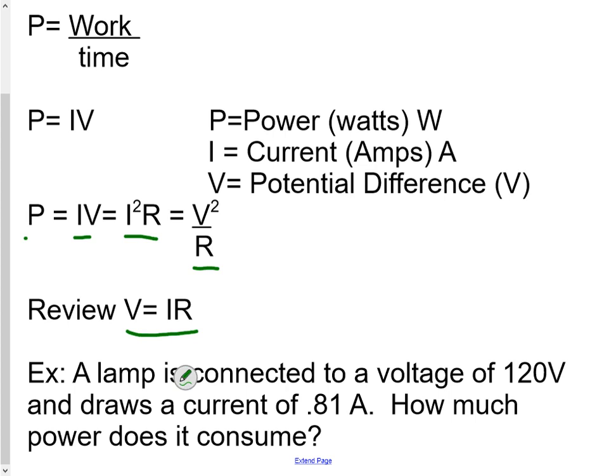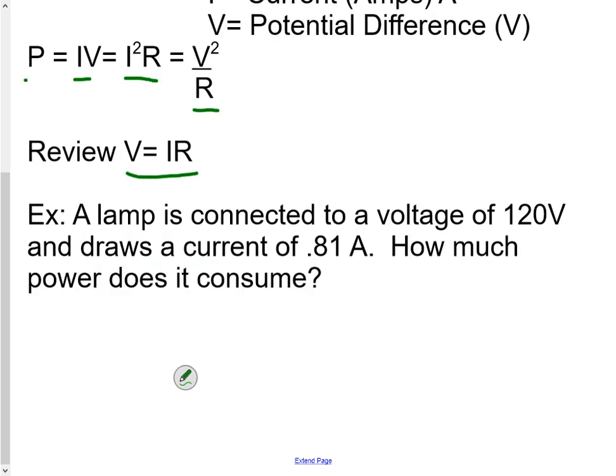Let's try our first problem. We have a lamp connected to a voltage of 120 volts and it's drawing a current of 0.81 amps. How much power does it consume? So, P equals IV: power equals current times voltage. Current is 0.81 amps and voltage is 120 volts, so if we multiply those two, we get 97.2 watts.